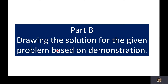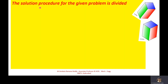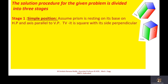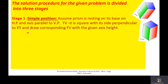We now enter Part B: drawing the solution for the given problem. The solution procedure is divided into three stages. Stage 1 is the simple position: assume the prism is resting on its base on HP with the axis parallel to VP. In this position, the top view shows a square shape. After drawing the top view, we draw the corresponding front view with the given axis height. In the top view, the square is drawn with one side perpendicular to the XY line.